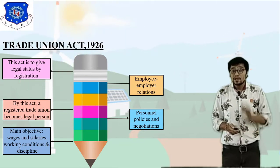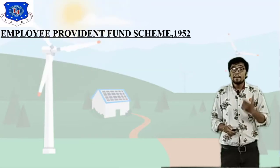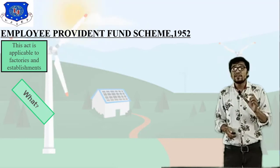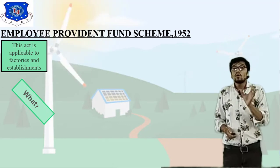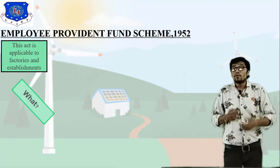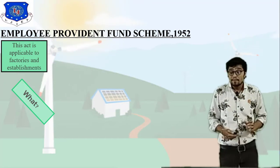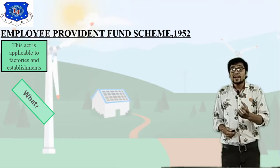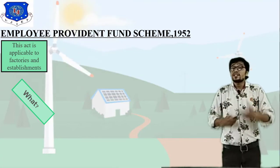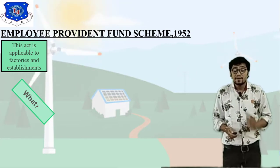Moving forward to the Employee Provident Fund Scheme 1952. It is a combination of three words — employee, provident, and fund scheme. Provident fund is a contribution given by the worker. The main definition is that this act is applicable to every factory and establishment — each and every factory must follow this rule.